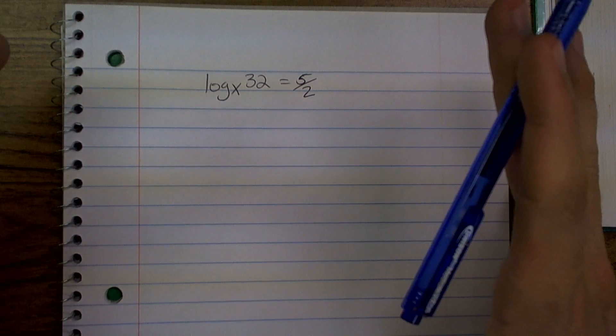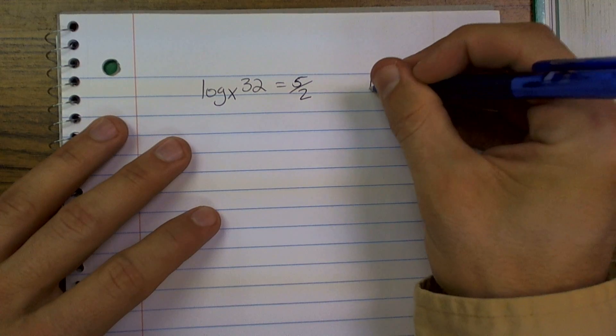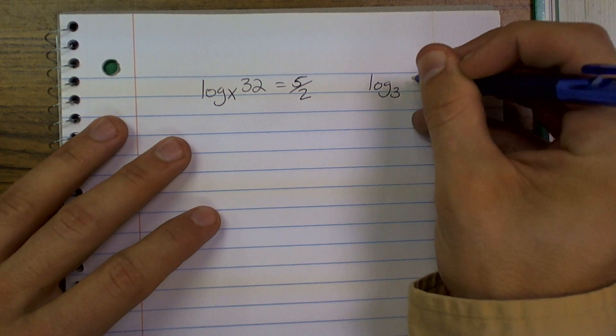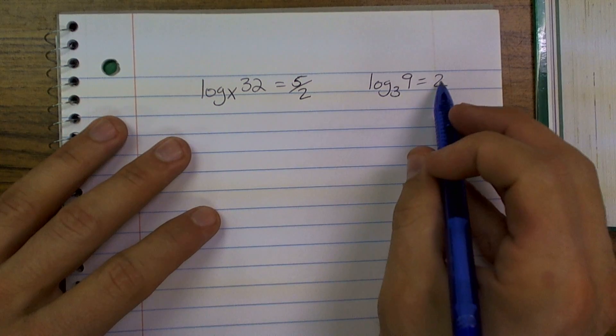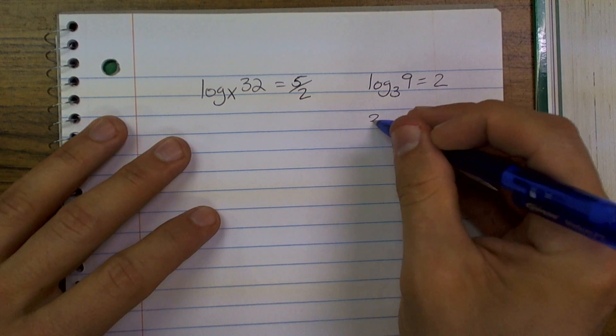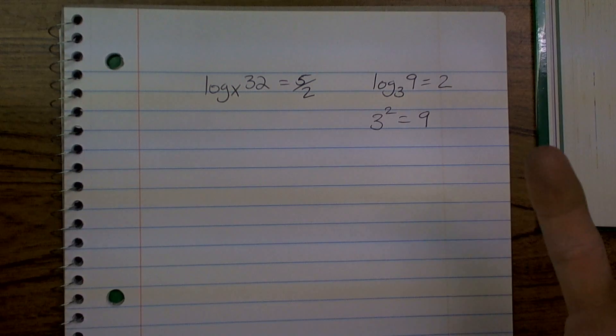So, to do this, what we're going to want to do is transfer this to exponential form. Remember, what I always like to remember is log base 3 of 9 equals 2. That just reminds me, 3 raised to the second power equals 9. So, I always write this as 3 squared equals 9. It just always reminds me of this.